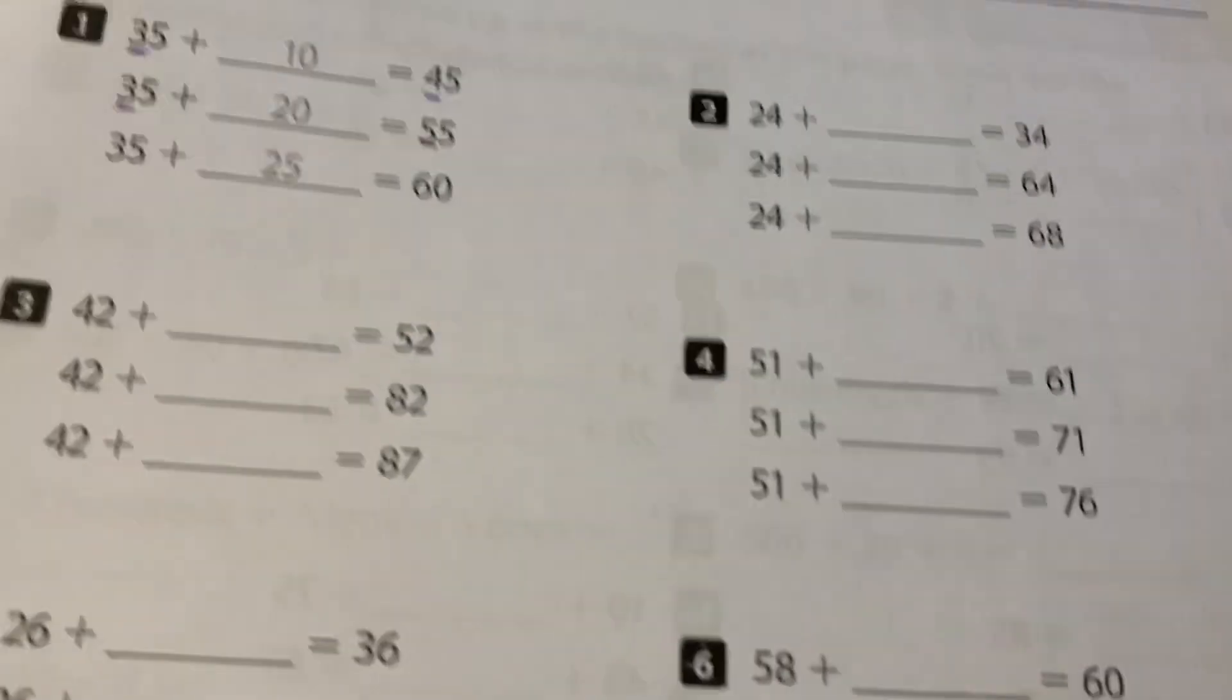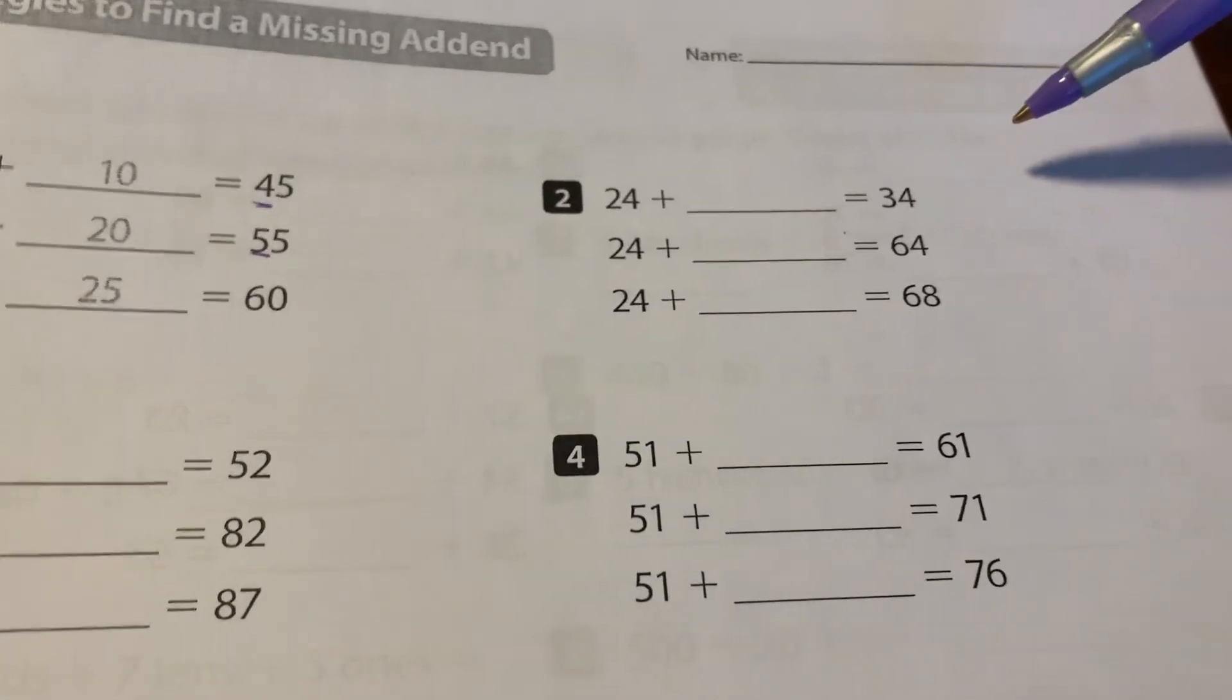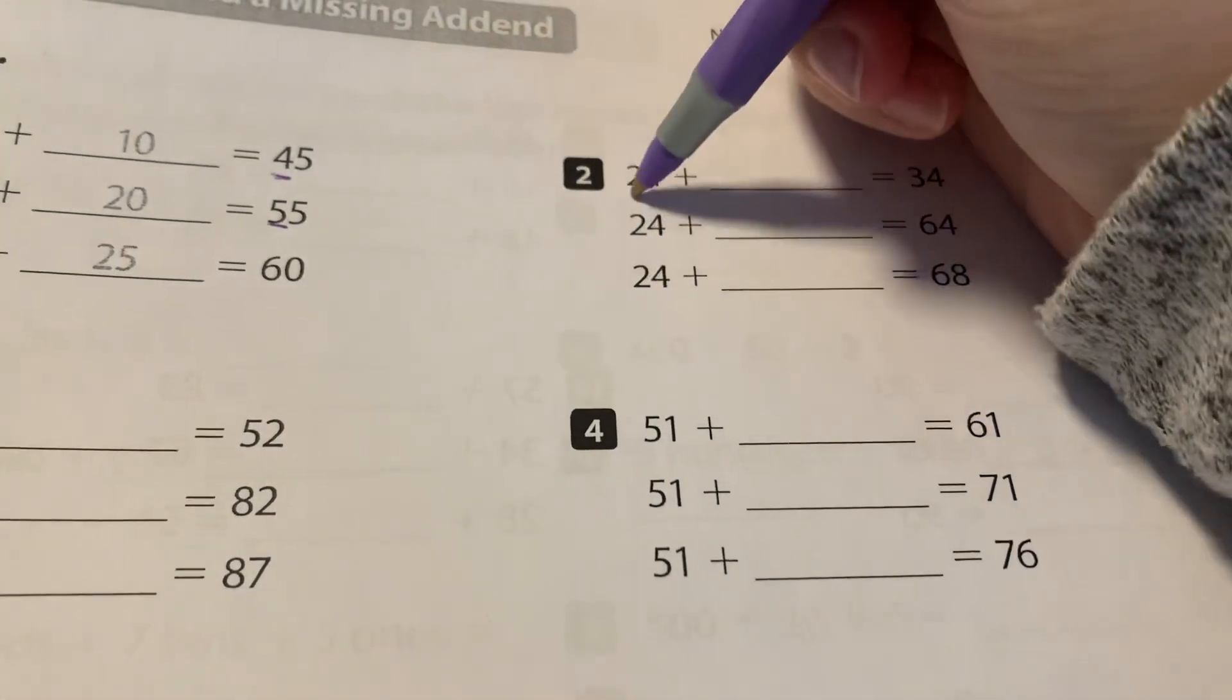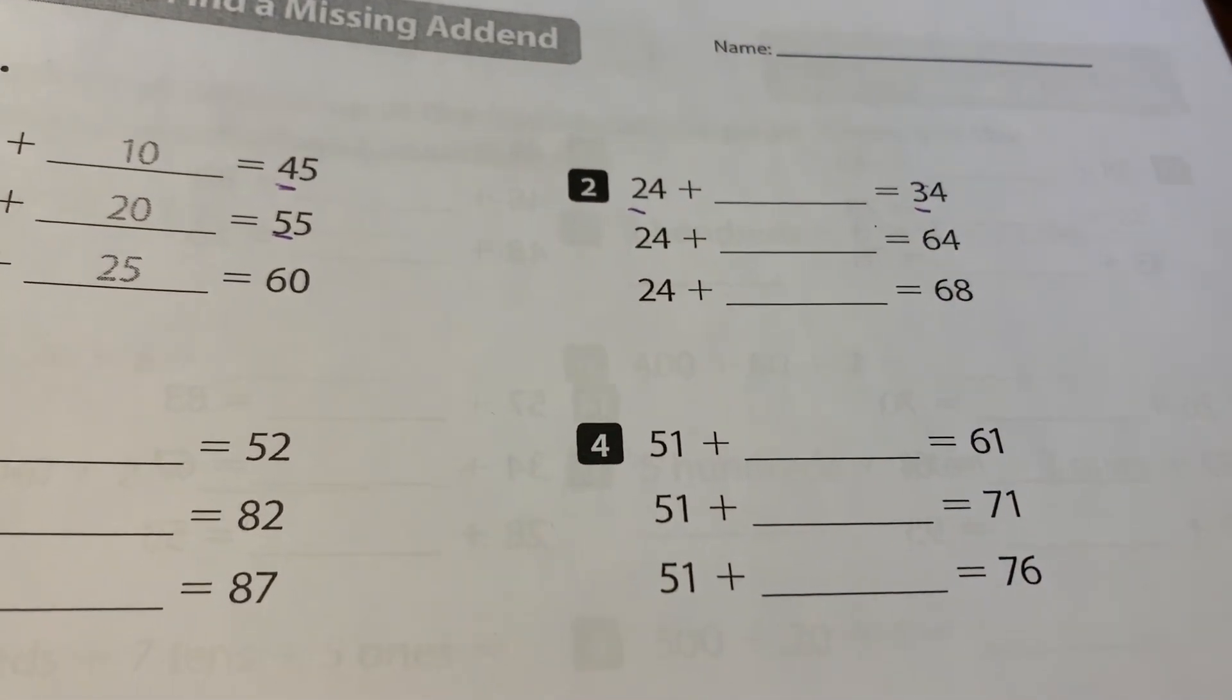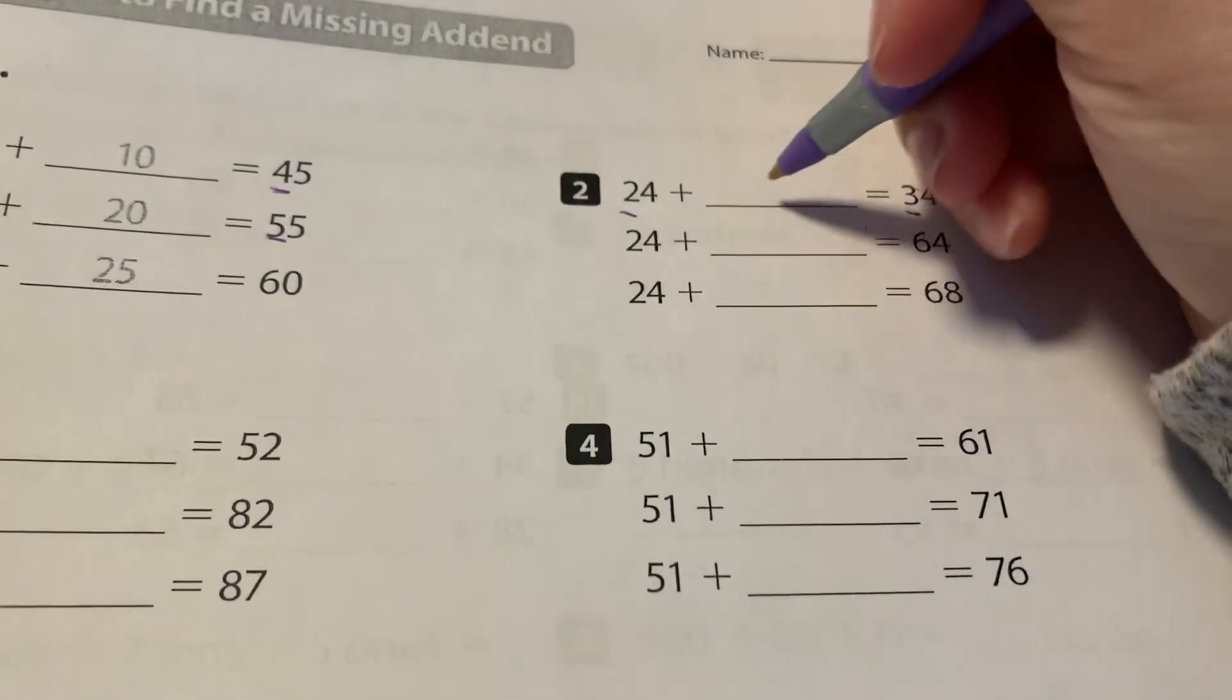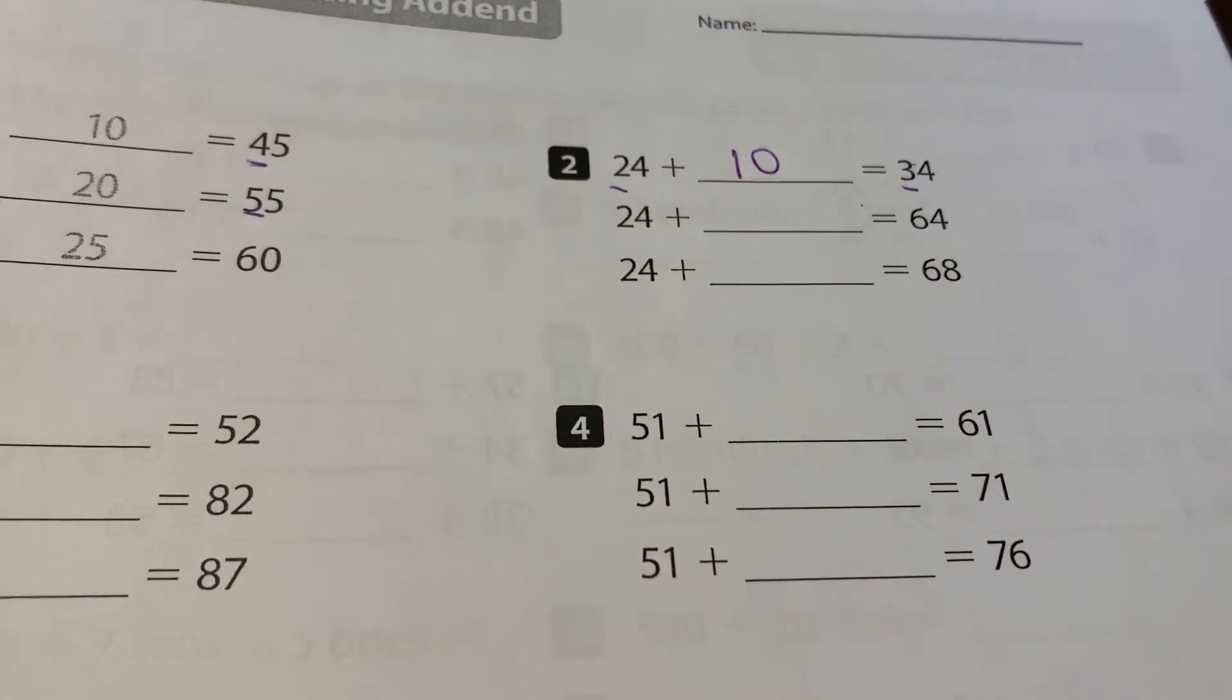Let's look at number two together. Number two, 24 plus a number is 34. Well, I know that my tens place is changing by one, which is equal to 10. So 24 plus 10 is equal to 34.